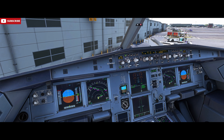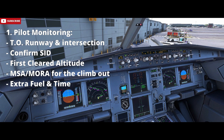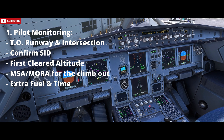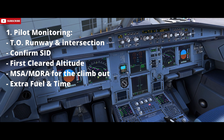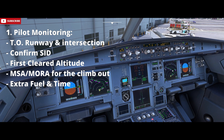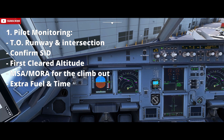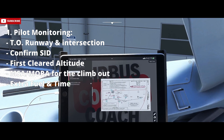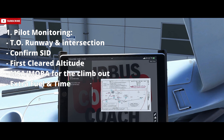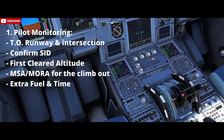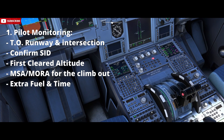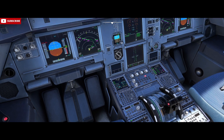The departure briefing is split into five parts. The first being the plan that's in our MCDU, so we're running through and cross-checking the takeoff runway, the standard instrument departure routing that we've been cleared to fly, and our first cleared altitude — we set that in and cross-check that. The MSA is on route, so we will be cross-checking the charts and discussing minimum safe altitudes for the climb out, and also extra fuel and the time that we may have, so we bring up the fuel page as well as part of that discussion.